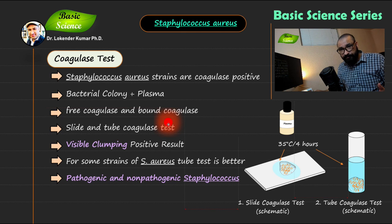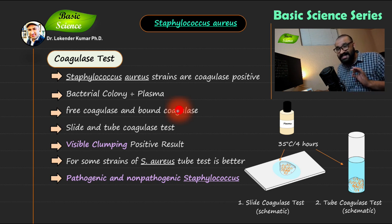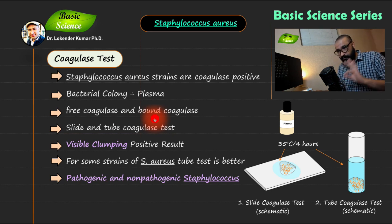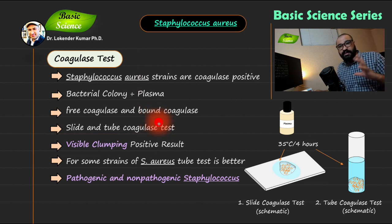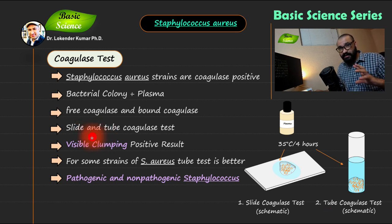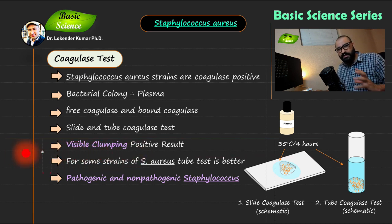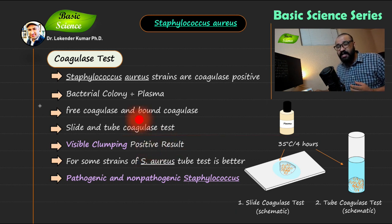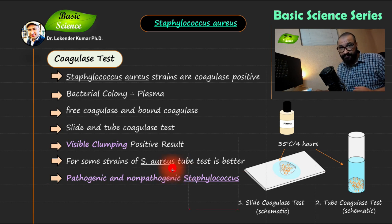You will add plasma, which contains fibrinogen. In the presence of coagulase enzyme, fibrinogen will be converted to fibrin — long threads of blood protein present in the plasma. Because of this thread formation there will be a coagulation reaction. You can detect bound coagulase using the slide test and free coagulase using the tube test. If you see visible clumping or gel formation, that indicates a positive result.